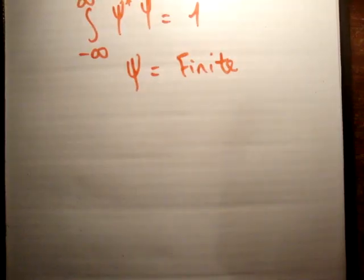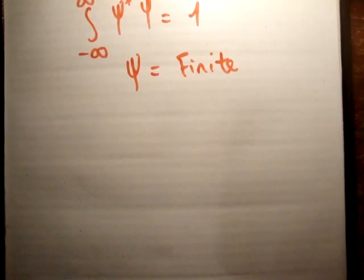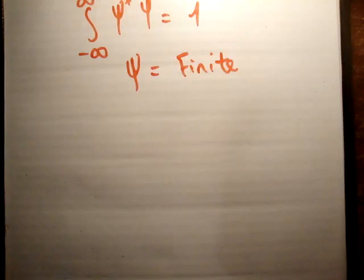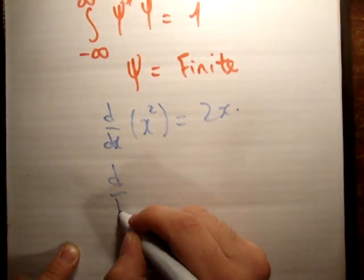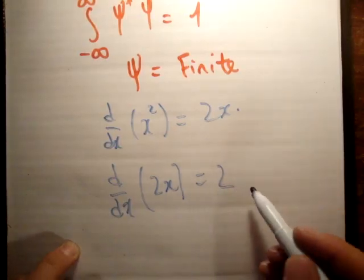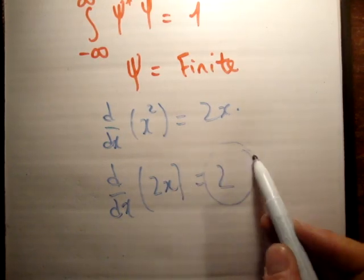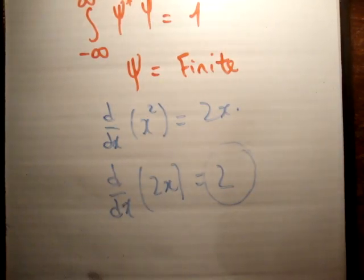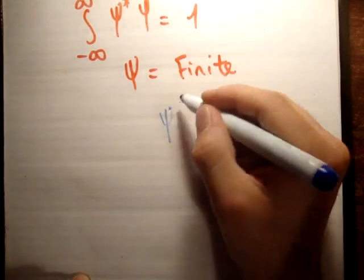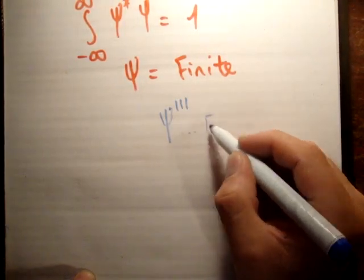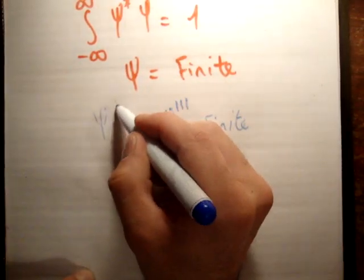So just to recap: the first derivative must be continuous because of the Hamiltonian acting on the wave function. The first derivative must be finite because of the momentum operator acting on the wave function. The second derivative must be finite, and the wave function itself must be finite. To state the general principle: if d/dx of x² equals 2x, and d/dx of 2x equals 2 — this result is finite only if the previous derivative was continuous. So if at any stage you have a finite derivative, say the third derivative is finite, that means the second derivative must be continuous.